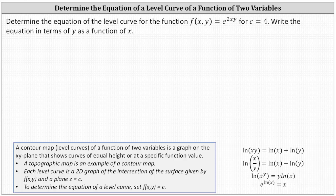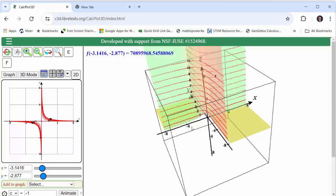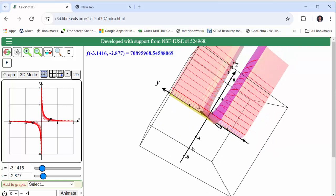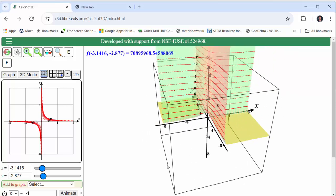Let's look at this graphically. On the right, the surface is given by the function f(x,y), and these red curves are level curves for various values of c. Because we're looking for the level curve when c = 4, the level curve is where the plane z = 4 intersects the surface, which we see here.